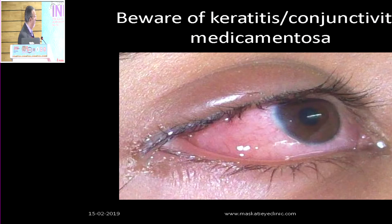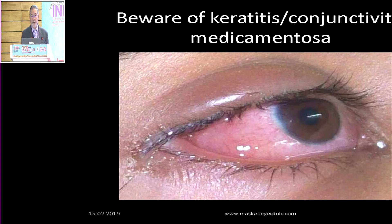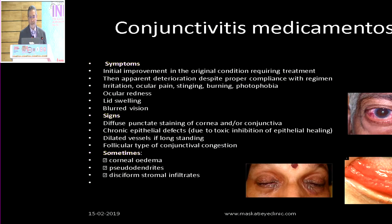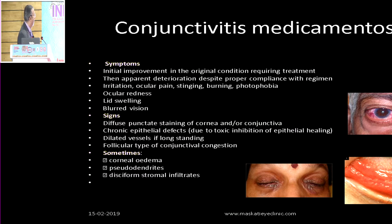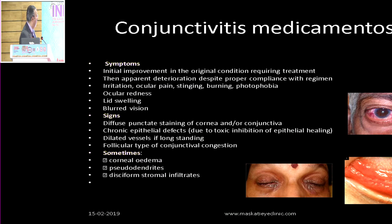Here is a patient who had some amount of chemosis as well — this angry red eye waxing and waning for the last 15 days on all sorts of treatment. Symptoms typically of conjunctivitis or keratitis medicamentosa: initial improvement in the original condition, then apparent deterioration with redness, lid swelling, blurred vision, and even chemosis. If it becomes keratitis medicamentosa, you can even get punctate staining and chronic epithelial defects.